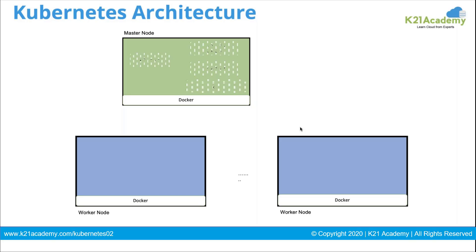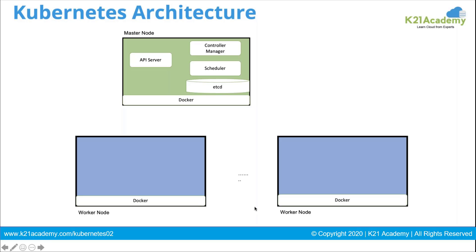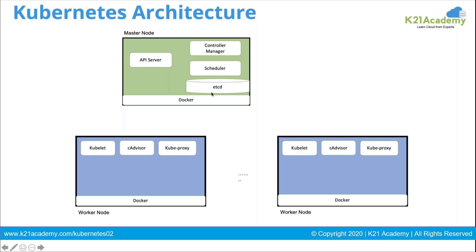The master Kubernetes processes are: API server, controller manager, scheduler, and etcd. The API server receives requests. The controller manager handles auto-scaling and auto-healing. The scheduler does the scheduling — it decides where a container gets placed in the cluster. And etcd is the configuration map, which should be backed up well so that you can restore complete configuration if something happens to the cluster.